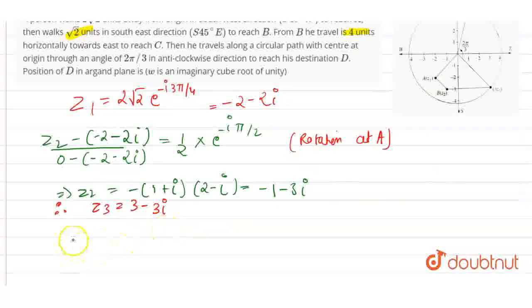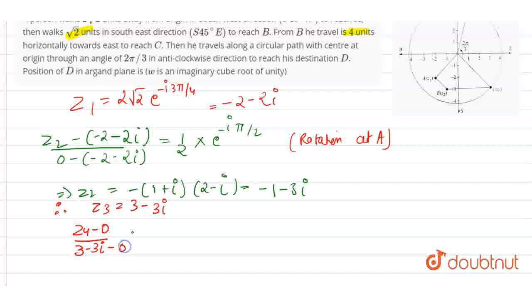In that case, Z4 minus 0 divided by 3 minus i minus 0 is going to be e to the i 2 pi by 3, which further implies that Z4 is equal to 3 times (1 minus i), rotation at O.